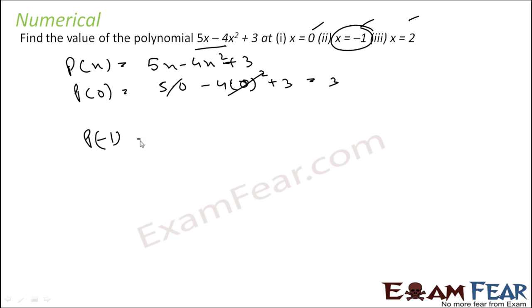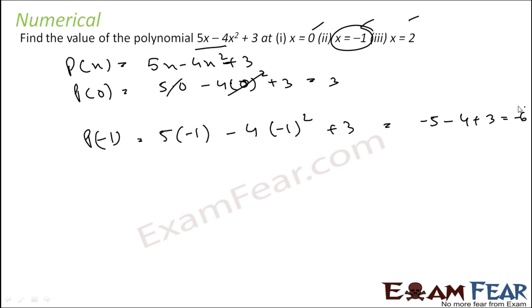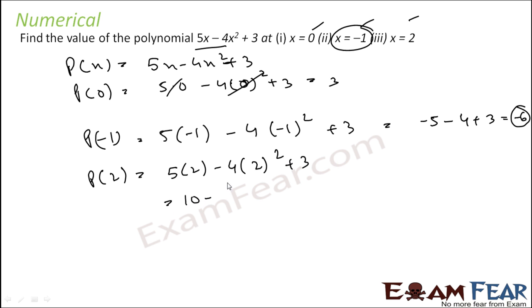To find p(minus 1), replace x with minus 1: 5 times minus 1 minus 4 times (minus 1) squared plus 3, which gives minus 5 minus 4 plus 3 equals minus 6. To find p(2), replace x with 2: 5 times 2 minus 4 times 2 squared plus 3, which gives 10 minus 16 plus 3 equals minus 3. That is the answer.